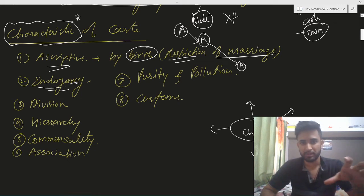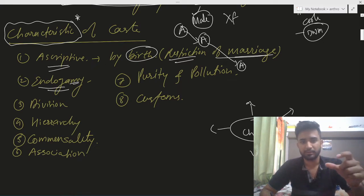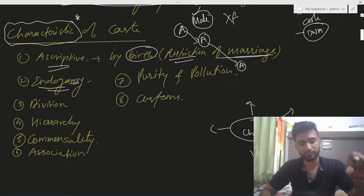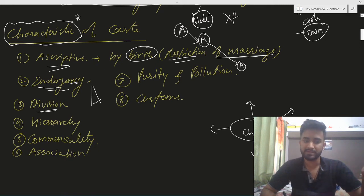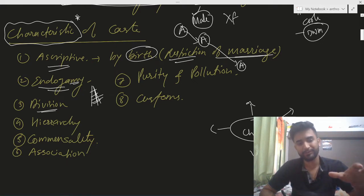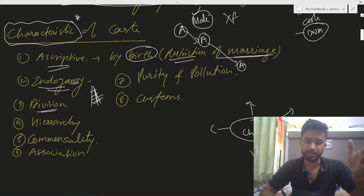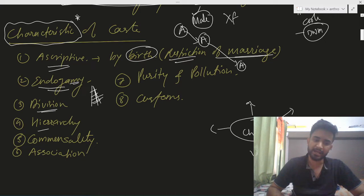Caste is restrictive of marriage — there is endogamy, meaning marriage within one's own group. Parents will prefer their child to marry within their own caste. Next is division — Brahmin, Kshatriya, Vaisha, Shudra, and Untouchable are the divisions, and within each section there are further sub-divisions. Next is hierarchy.